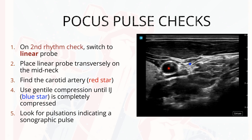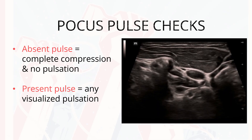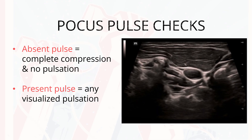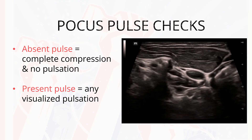So how do you actually perform a POCUS pulse check? On the second rhythm check, you'll switch to a linear probe and place it transversely on the mid neck. You'll find the carotid artery, marked here as a red star. Use gentle compression until the IJ is completely compressed, marked by a blue star, and look for pulsations indicating a sonographic pulse. In cases where ROSC has been achieved, the artery will not completely compress and should display pulsatility. You can do this at the femoral artery as well, but no study has ever compared the different sites. Do not use color Doppler — it's too complicated; just use compression.